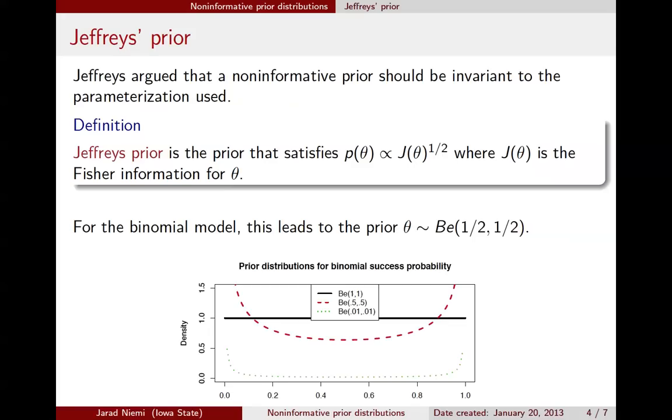All right, so I want to now take a look at the different priors that we've been talking about for this success probability parameter. The first prior that we talked about is the uniform 0, 1, otherwise known as the beta 1, 1 prior, and that's given here by the solid black line. This prior seems to intuitively do what we want in that it gives equal probability to any value of theta, of the success probability. In contrast, this non-informative Jeffreys prior, the beta 1 half, 1 half prior, shown in the red dashed line, this actually gives less probability, prior probability, to success probabilities around 0.5, and higher prior probability to success probabilities closer to 0 and closer to 1.